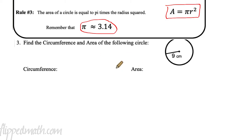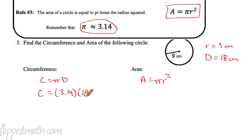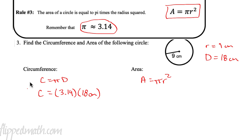Let's find the circumference and area of a circle with radius 9 centimeters. Cherry pie is delicious: circumference equals pi times diameter. The radius is 9, so the diameter equals 9 times 2, which is 18 centimeters. The circumference equals 3.14 times 18 centimeters, which equals 56.52 centimeters. Don't forget your units.